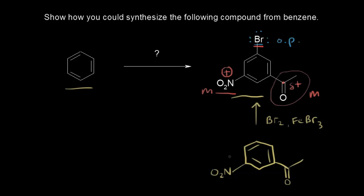Now let's figure out the next precursor. We have two groups: a nitro group and an acyl group. We could do a nitration to put the nitro group on, and a Friedel-Crafts acylation to put the acyl group on our ring. The question is which one comes first. It turns out you can't do a Friedel-Crafts acylation with a moderate or strongly deactivating group already on your ring, and the nitro group is strongly deactivating. So we can't put the nitro group on first.